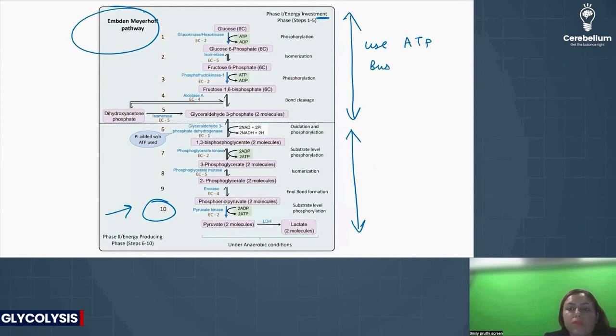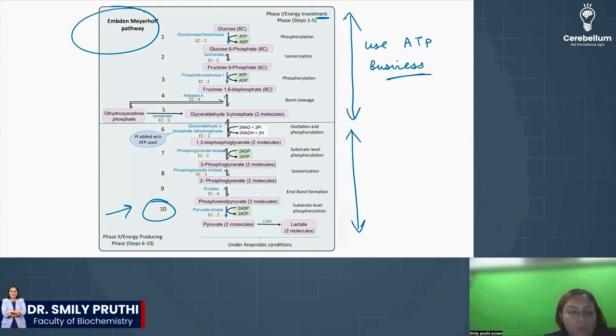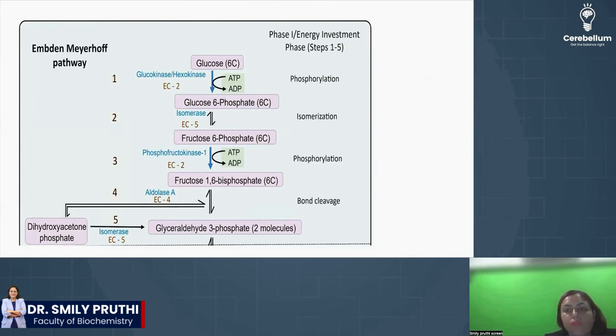This is the rule of business. For any business, we have to first invest, only then we are able to gain out of it. So any catabolic pathway which is going to give energy in the end is going to use energy in the starting. The second phase will produce ATP. So let's look at the first phase.